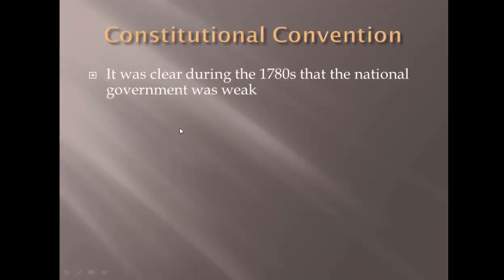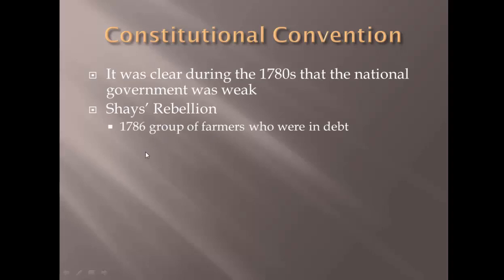As we continue to roll through this, it was pretty clear during the 1780s that the national government was just weak. They built a government at the top that seemed to not have enough power to do its job. What event kind of showcases that is something known as Shays' Rebellion. Daniel Shays was a farmer in western Massachusetts. The state of Massachusetts began taxing its citizens. The folks in the eastern portions could afford to pay the tax, whereas the western farmers could not. They were being arrested, going to courthouses, and eventually jailed for being in debt.